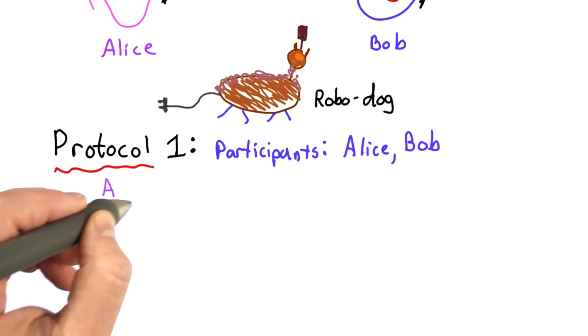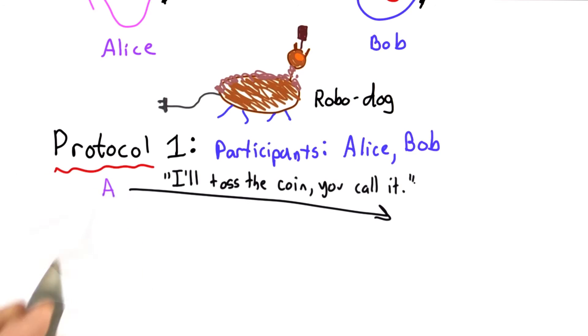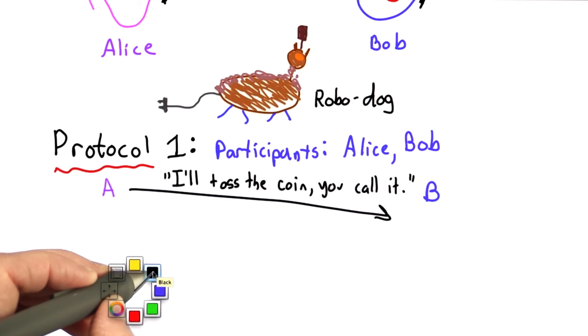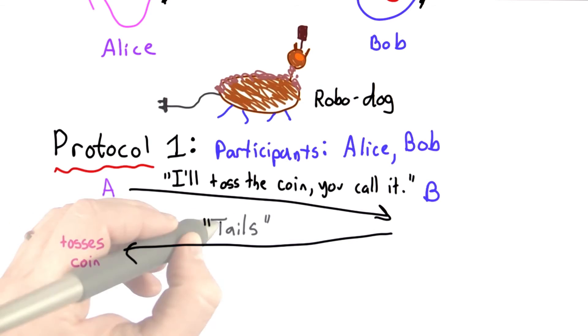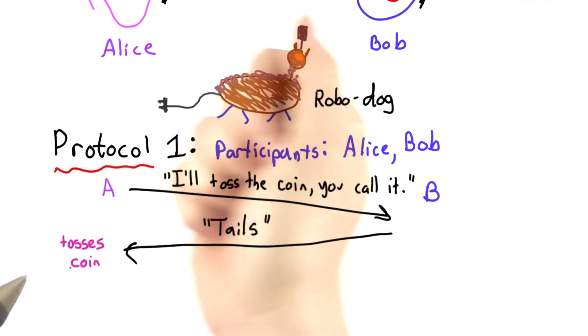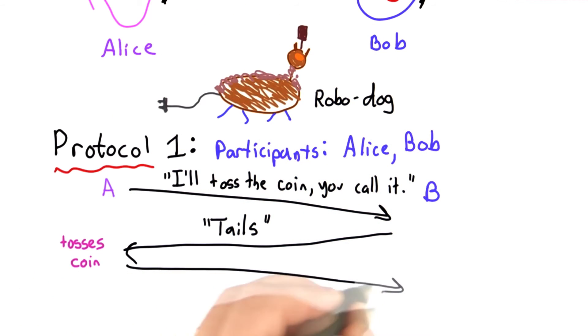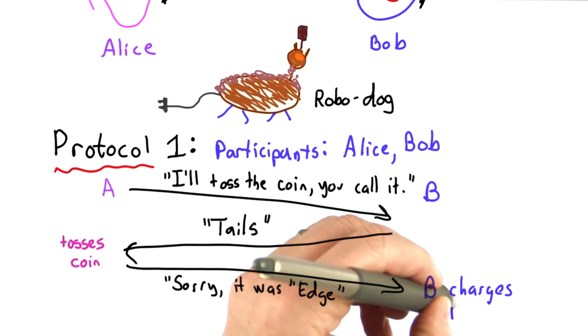So the protocol starts by Alice initiating it. So she initiates the protocol by sending Bob a message that says, I'll toss the coin, you call it. Bob calls the coin, and so he sends a message back to Alice that says, I call Tails. At this point, Alice tosses the coin, and she responds to Bob that, sorry, with the result of the coin toss. In this case, she'll respond, sorry, it landed on the edge. And it's Bob's turn to walk the robo-dog.